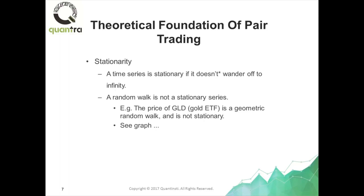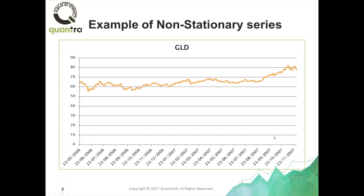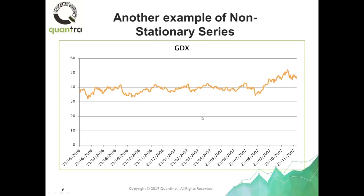A time series is called stationary if it doesn't wander off to infinity as time goes on. A random walk, or a geometric random walk for those who are sophisticated, is not a stationary time series. For example, let's look at the price of gold as represented by the ETF GLD. It is undergoing what we call a geometric random walk, and this is the time series.